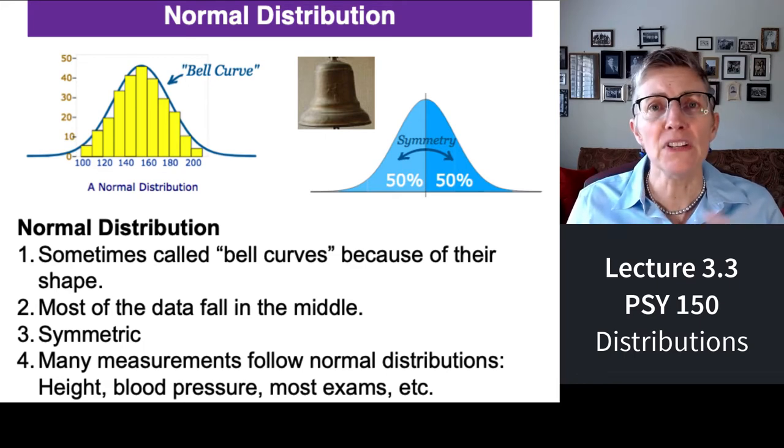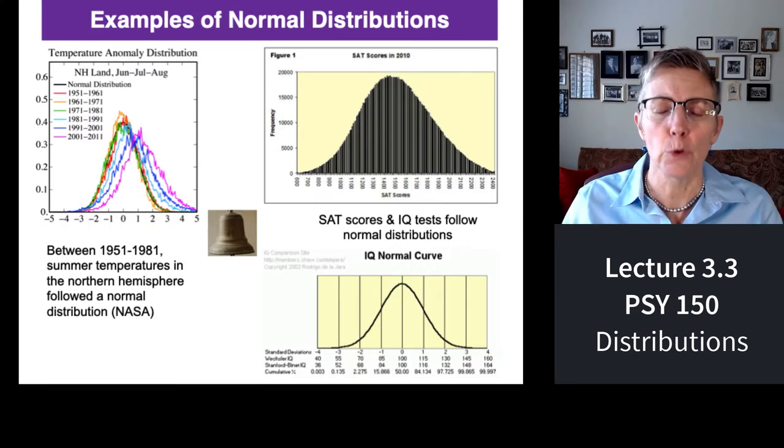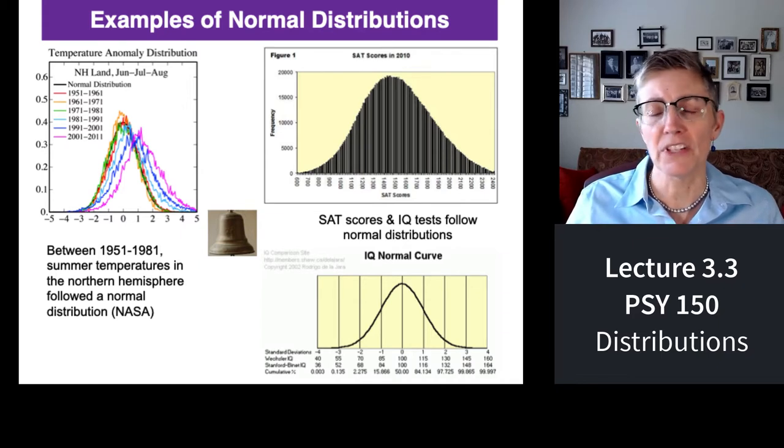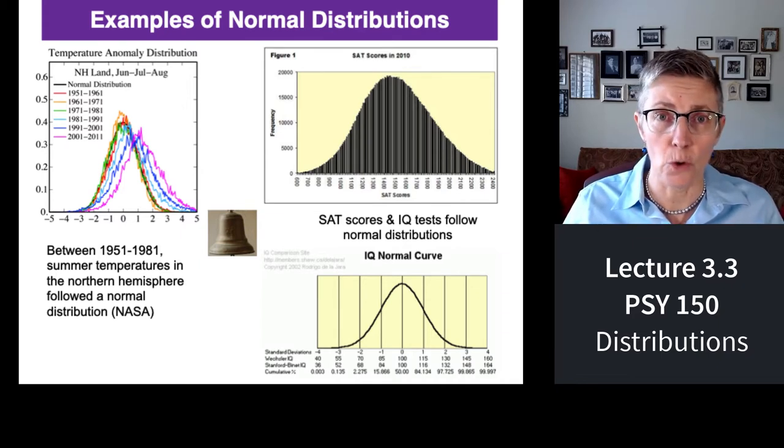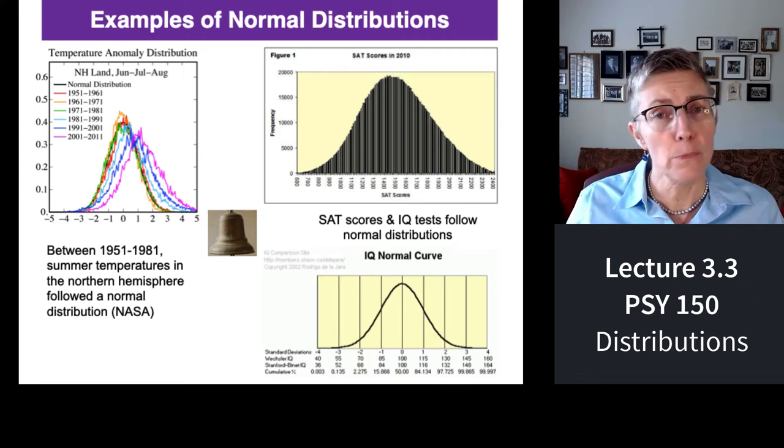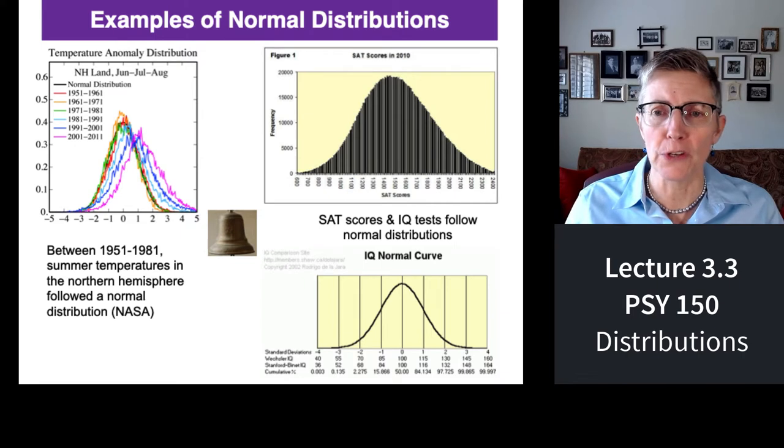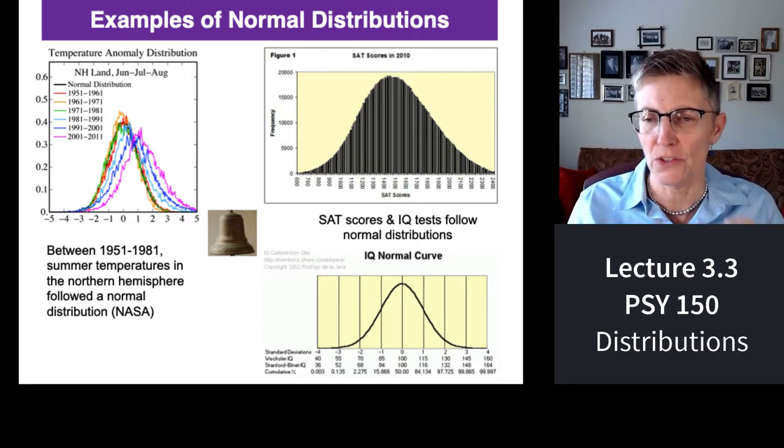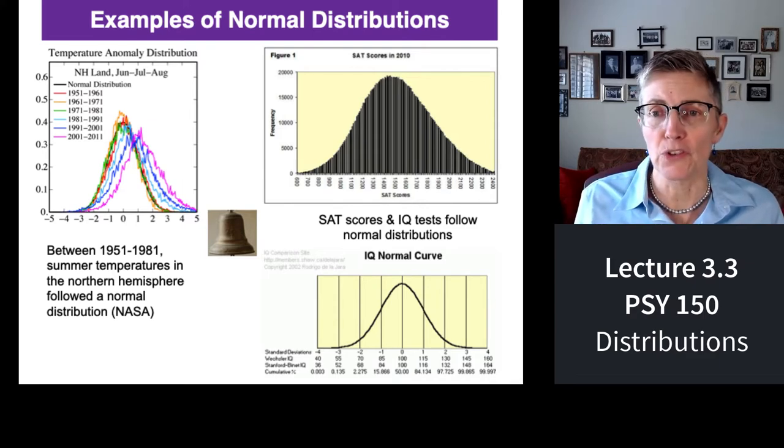Here's some more examples of normal distributions. You can see this normal distribution for SAT scores. There's a normal distribution for IQ scores. Here are some sort of normal distributions for temperature, summer temperatures in the northern hemisphere. They were more bell-shaped in the 50s, 60s, and 70s. In the 90s and 2000s, it's starting to skew a little bit. But there are a lot of normal distributions.